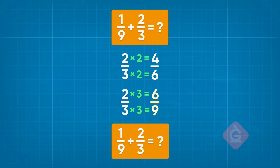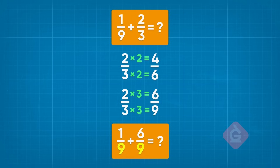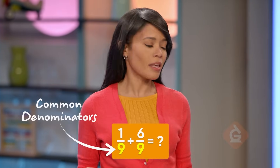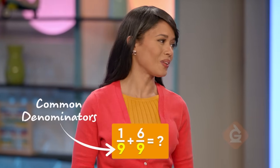That's it. Since 6/9 is equivalent to 2/3, we can use 6/9 in the problem — that makes both fractions have like denominators. In math, when two fractions have the same denominator, we call that common denominators, and it makes adding them together simple.